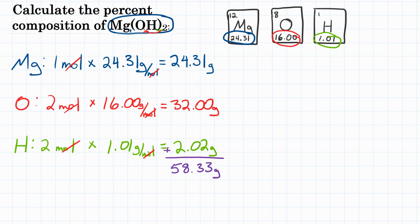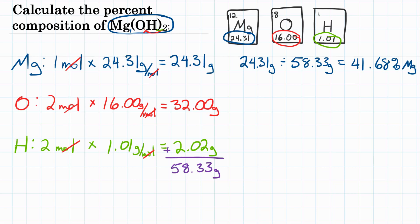Then our final step, we're going to divide each of these masses by that molar mass. So 24.31 grams divided by 58.33 grams — grams cancel out — and we get 41.68 percent, and that is for magnesium. For oxygen, we're going to take 32.00 grams, divide that by the same molar mass, 58.33 grams, and we get 54.86 percent.